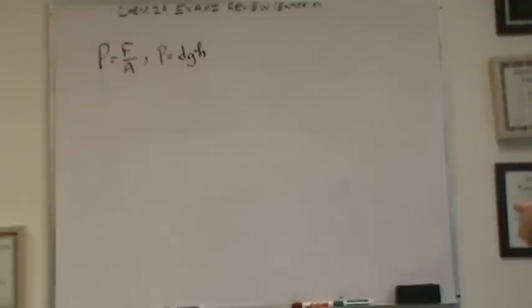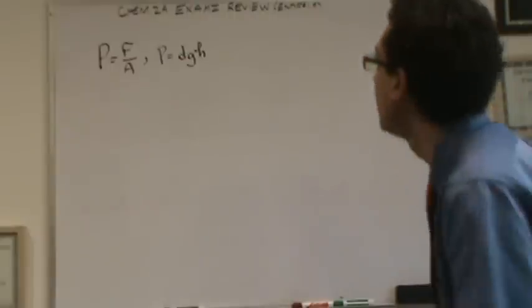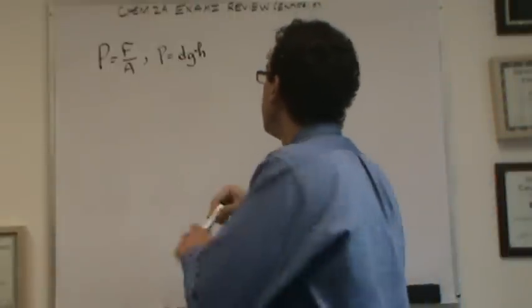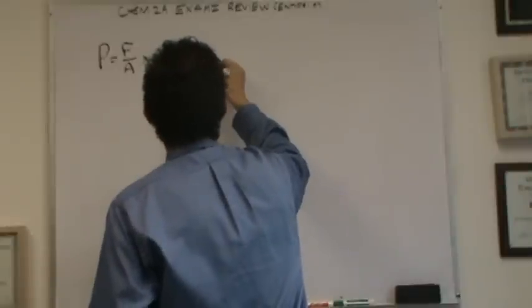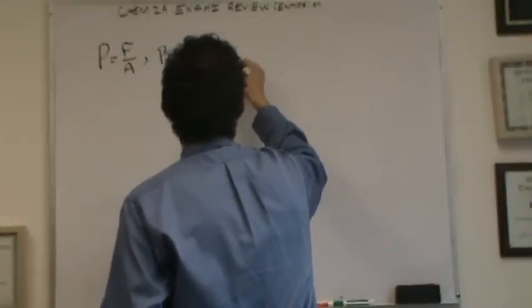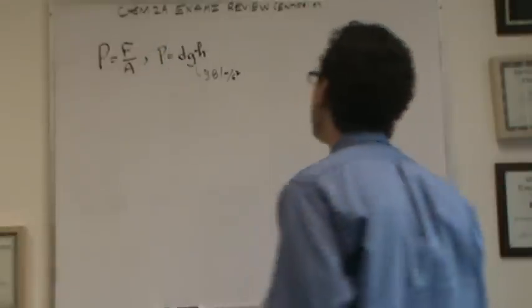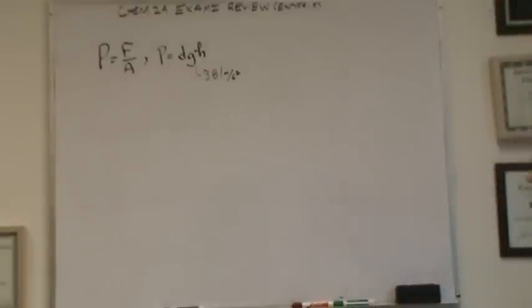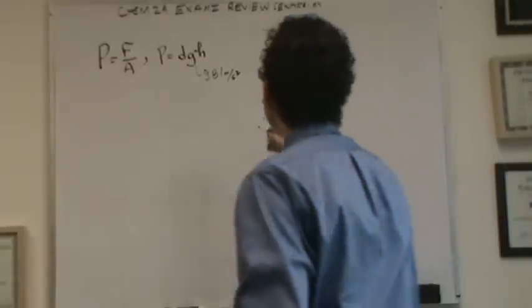You'll use this formula right there, the pressure area equals density times gravity times height, for liquids especially. So if you've got a liquid and they're asking about pressure, you're going to use this one. This would be the density of liquid. G would be 9.81 meters per second squared. So you'd be given that constant on the test, and height would be the depth of the liquid itself.